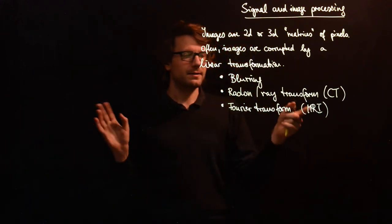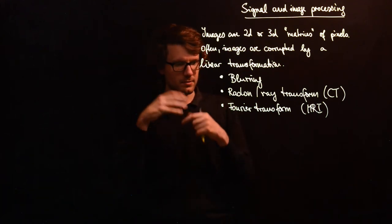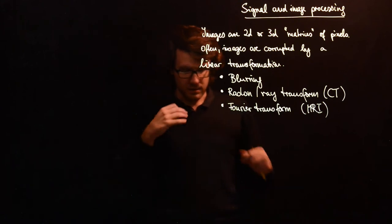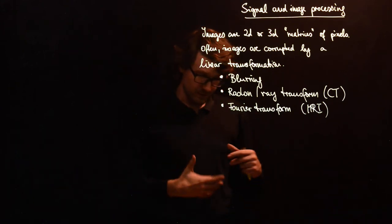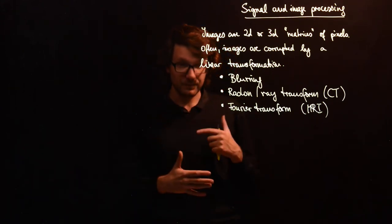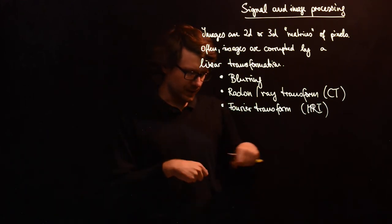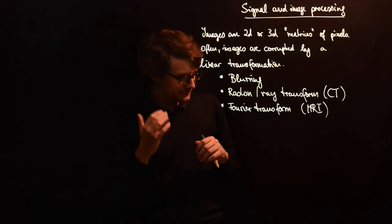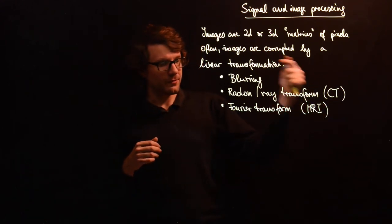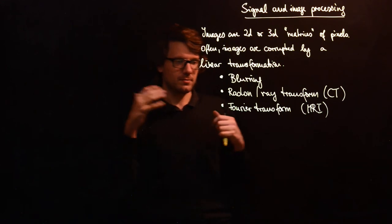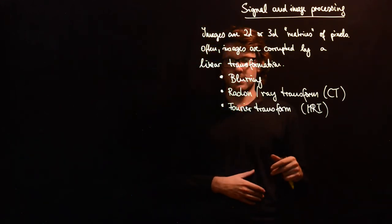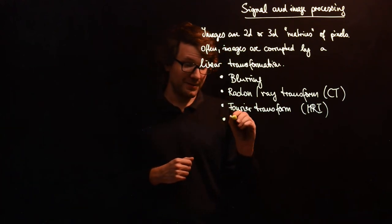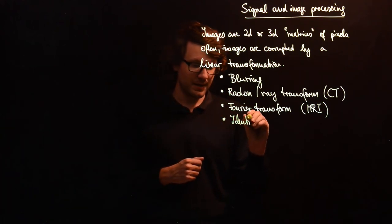You want to basically go back and reconstruct your image from the Fourier transformed image to the actual image in the body. The image in this case being the distribution of some hydrogen in your body.